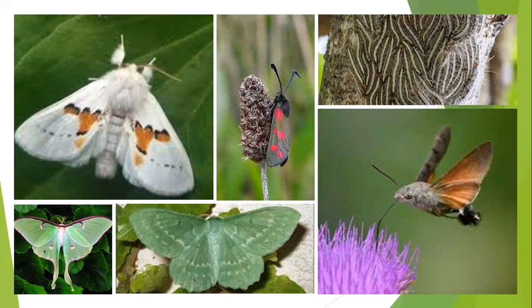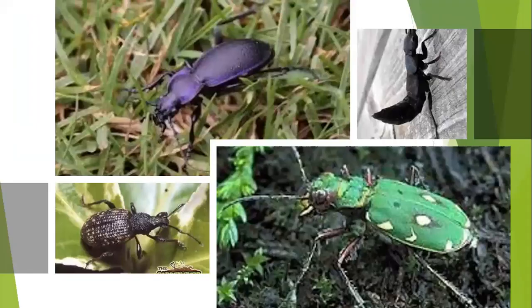Moths are actually nine to one in ratio compared to butterflies - there are 160,000 species of moths on the planet. They're massive, massive pollinators and live for about 30 days. We have the six-spot burnet moth in the center, which is very popular, and the large emerald at the bottom. You see them at night - a great thing to do is go out and shine a light at night and see the different ones. Very, very important to our ecosystem.